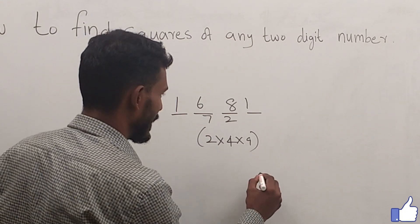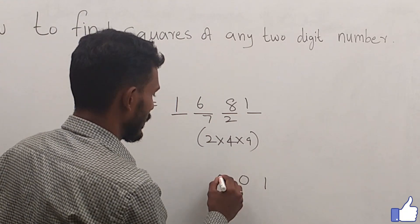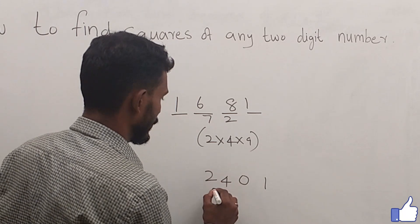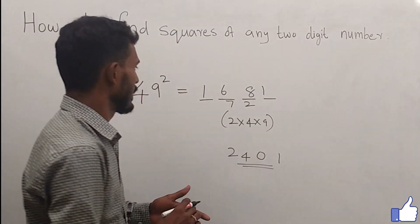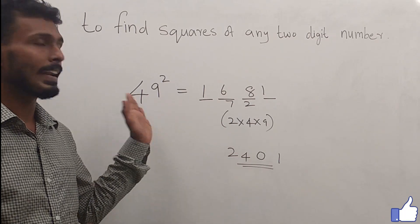That is, 1, 0, 4, 2. 2, 4, 0, 1. This is the value of 49².